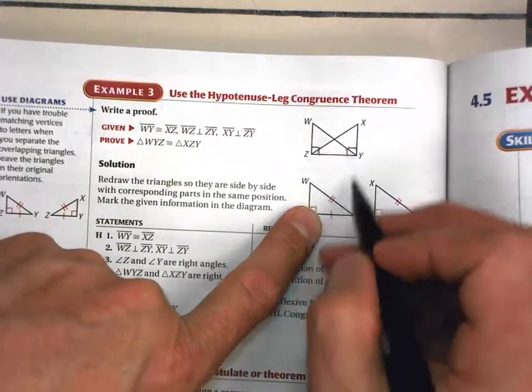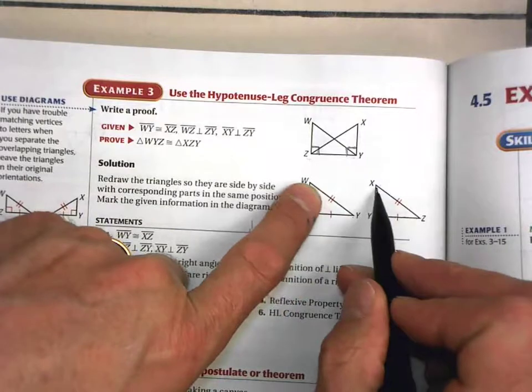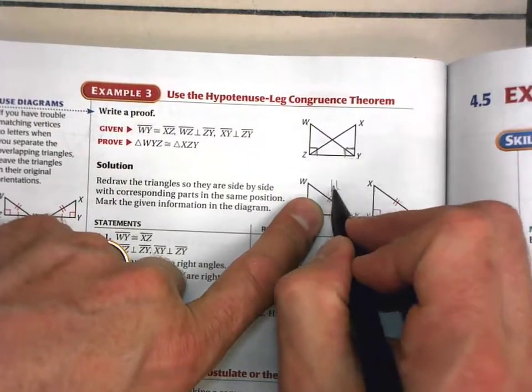And this is a right triangle. So this is going to be my hypotenuse. And I have a pair of hypotenuses. Let me go ahead and say that. I need to find that out.